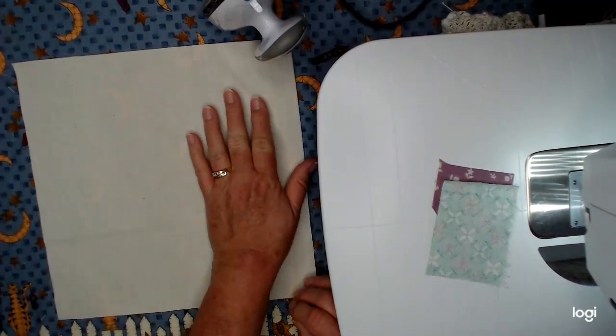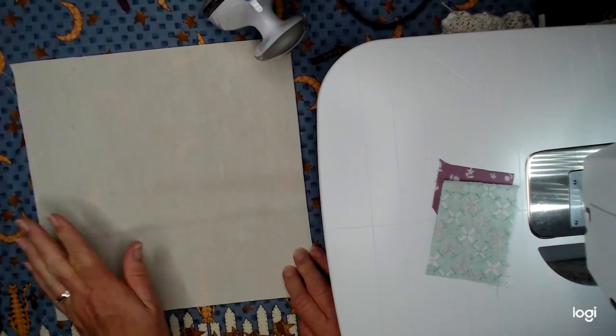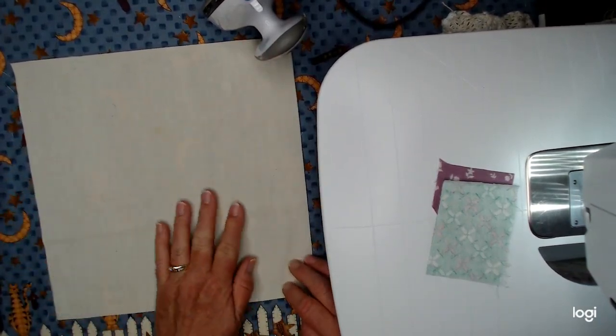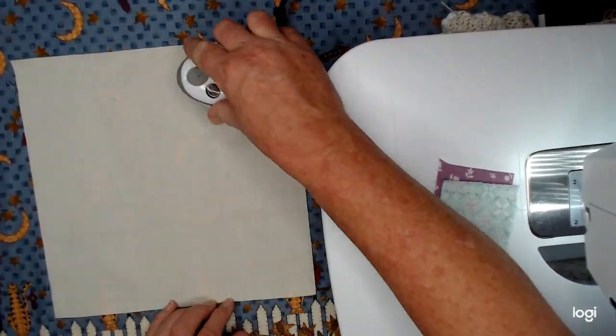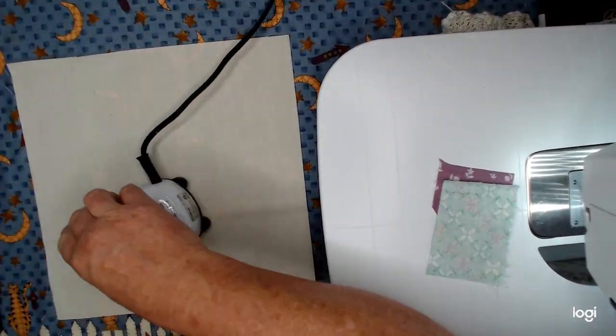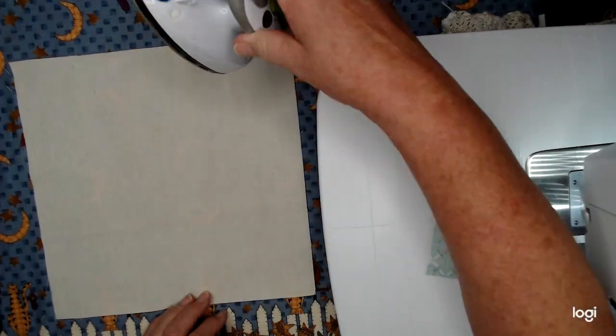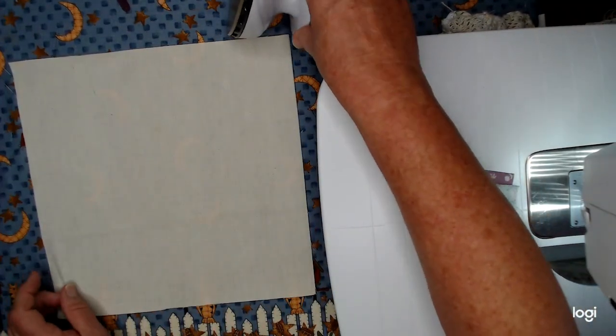So what I have here is an 11 inch square. You can start with any size you want and your background can be anything you want it to be. Mine just happens to be muslin because that's what I have an abundance of.